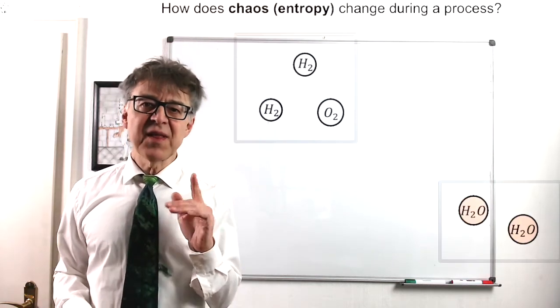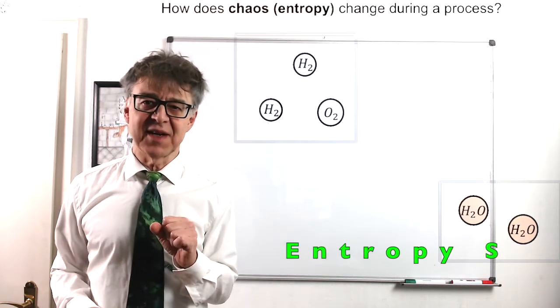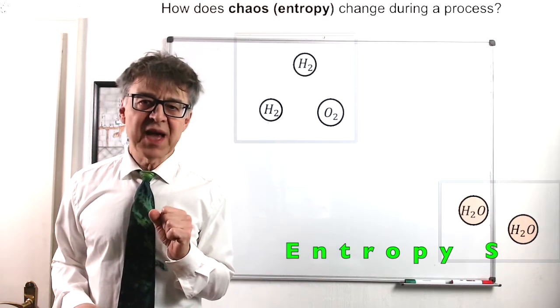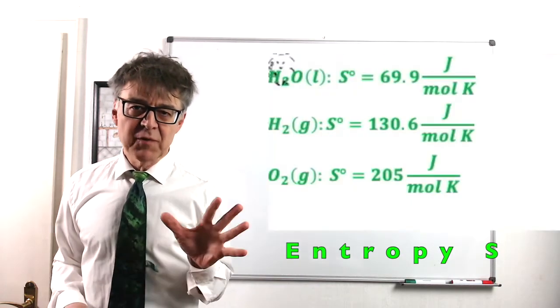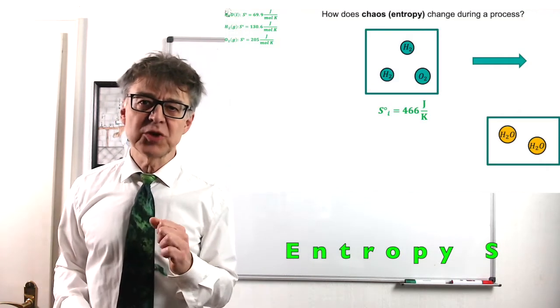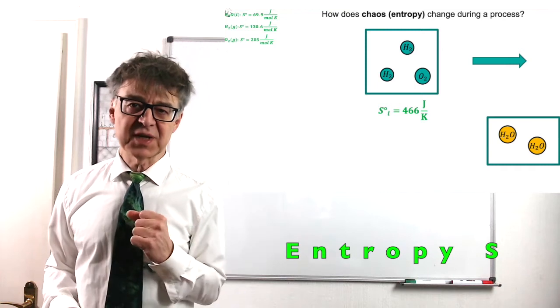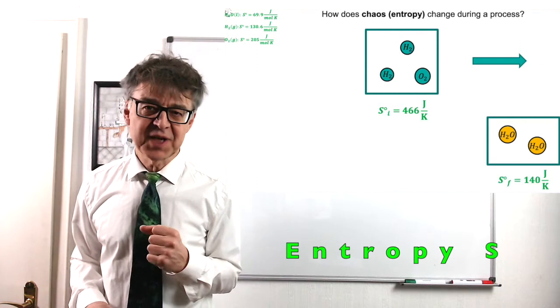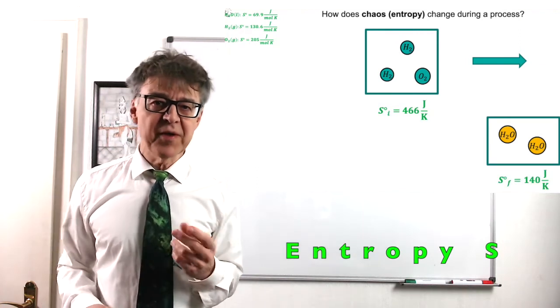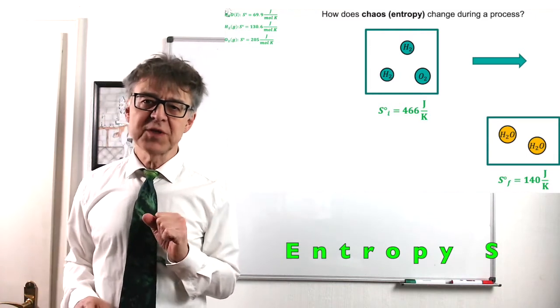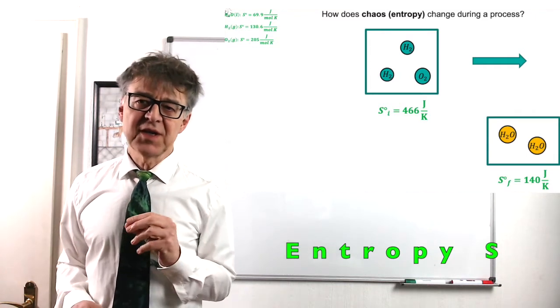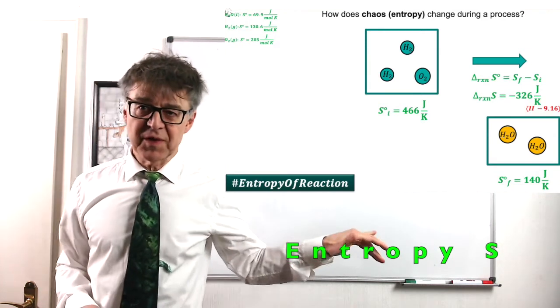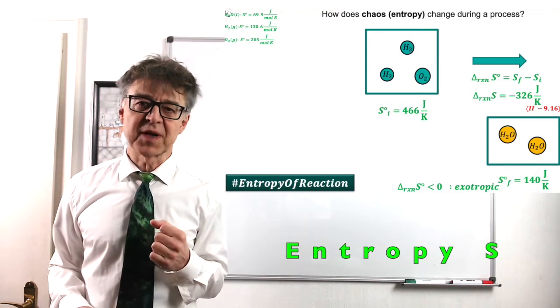The enthalpy of reaction is a measure of how the energy changes in a process. In this case, negative 572 kJ. We can also consider another thermodynamic quantity, which is even less clear, namely the chaos, the entropy S. Again, we will find the entropy of many substances in textbooks. We will find an entropy of 466 joules per Kelvin for the reactants, the Oxyhydrogen gas. This is quite a high entropy, while gases are pretty chaotic. The entropy of liquid water, on the other hand, is only 140 joules per Kelvin. The product clearly is much more orderly. This means the entropy decreases during the process, a so-called exotropic process.